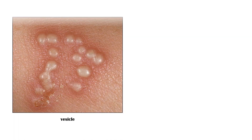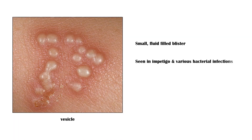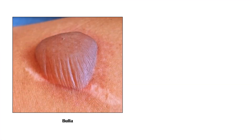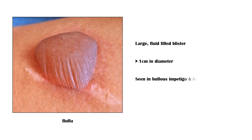A vesicle is a small, fluid-filled blister, typically seen in impetigo and various bacterial infections. A bulla is a larger, fluid-filled blister, measuring more than 1 cm in diameter. They commonly occur in bullous impetigo and bullous pemphigoid.